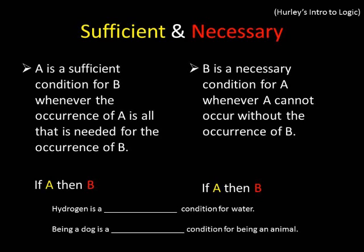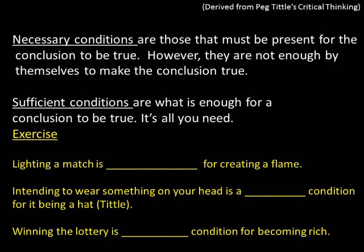In the exercise: hydrogen is a necessary condition for water, because you must have hydrogen but it's not sufficient — you also need oxygen. Being a dog is a sufficient condition for being an animal — all you need to do is be a dog to be an animal. But you don't have to be a dog to be an animal, so it's not necessary, only sufficient.